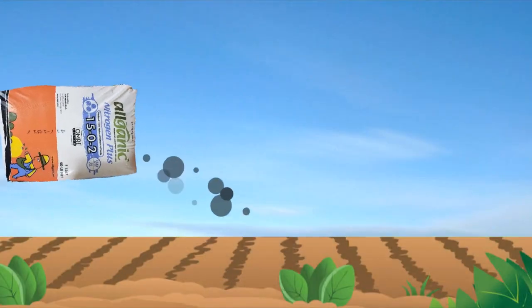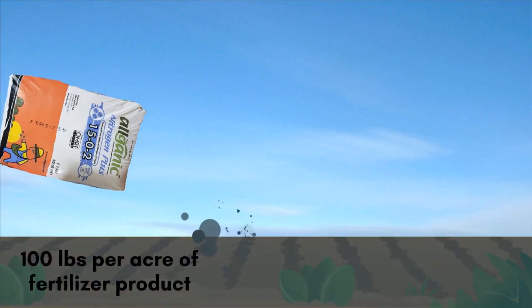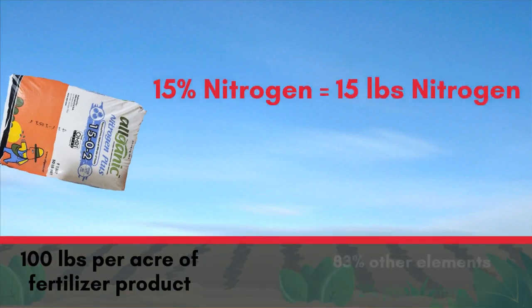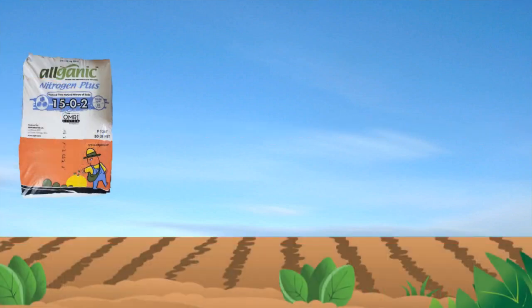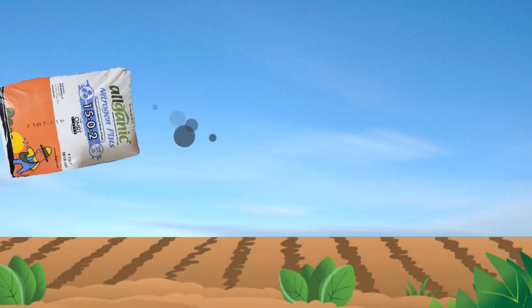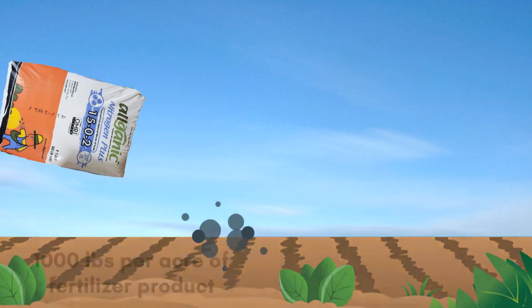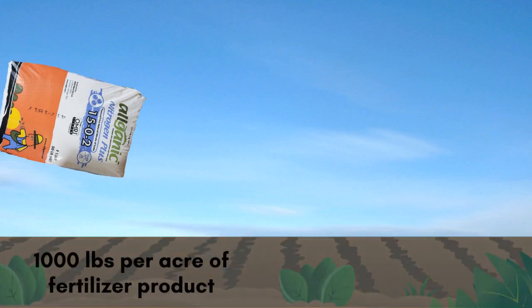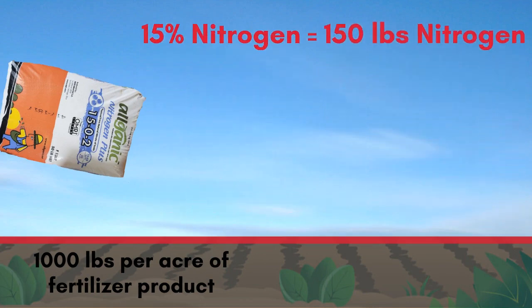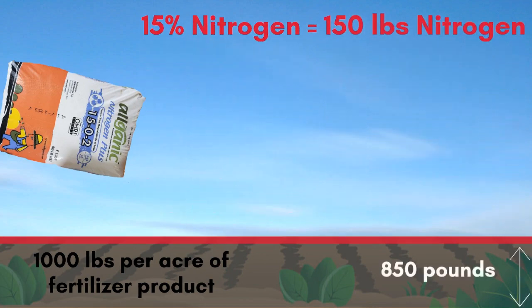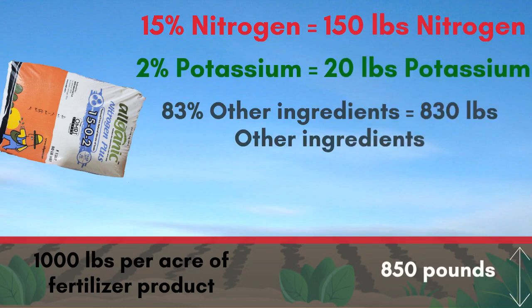Think about this situation. If a farmer were using a 15-0-2 fertilizer and put down 100 pounds per acre of fertilizer product, only 15 of those pounds would contain nitrogen. Similarly, if a farmer were putting down 1,000 pounds per acre of the same fertilizer product, only 150 pounds of the thousand would be nitrogen. The remaining 850 pounds would contain potassium and other natural ingredients.